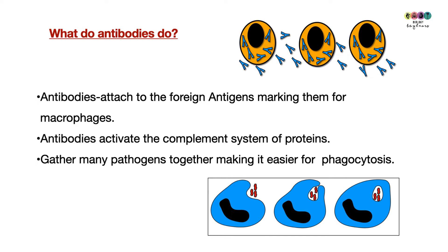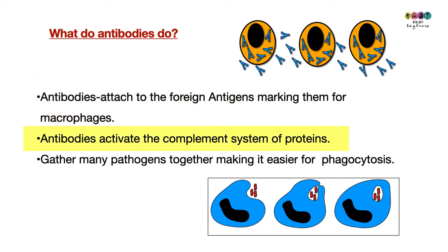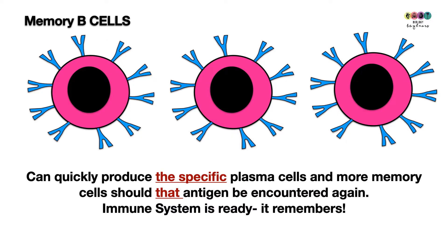The antibodies will flood your system and attach to that foreign antigen wherever they find it, marking the pathogen and making it easily identifiable to macrophages, which perform phagocytosis. Antibodies also activate the complement system — that system of proteins — which can burst bacterial cells. Antibodies also clump pathogens together, making it easier for macrophages to destroy them.